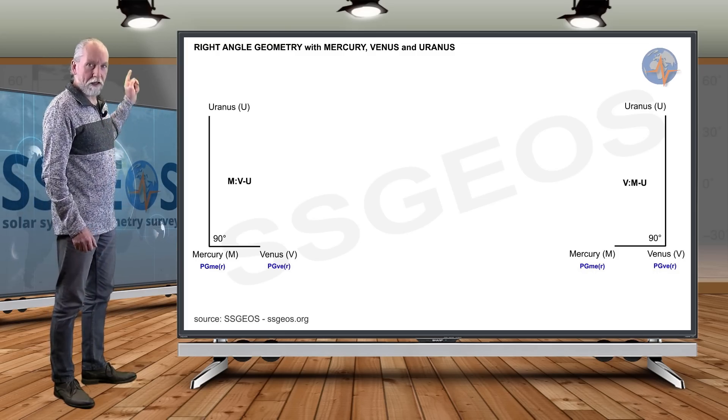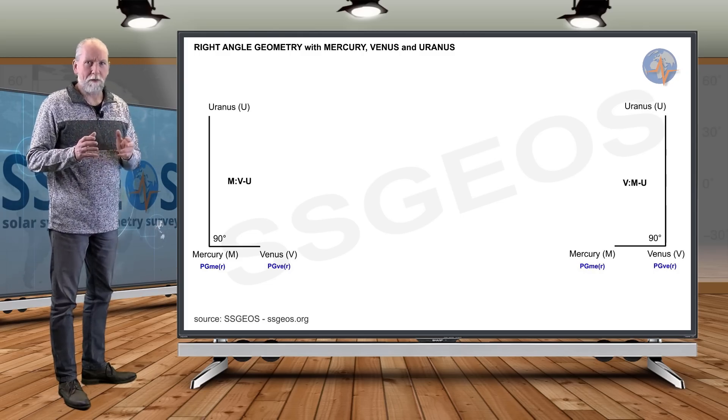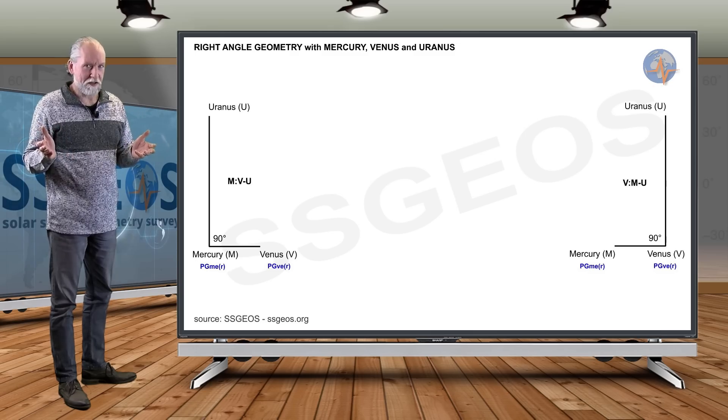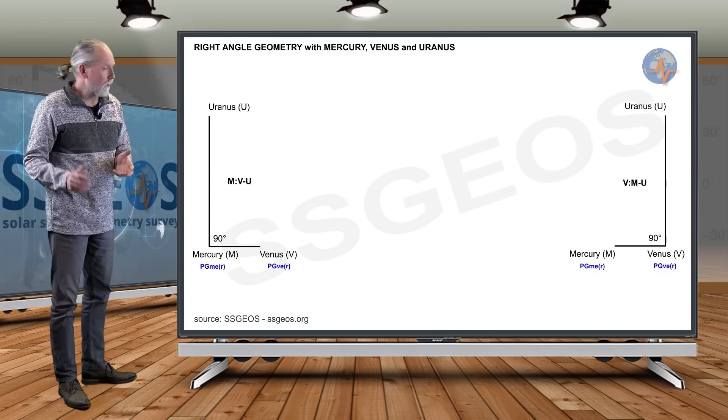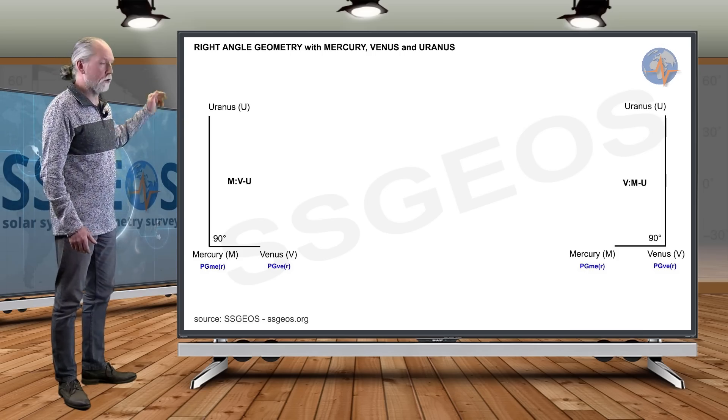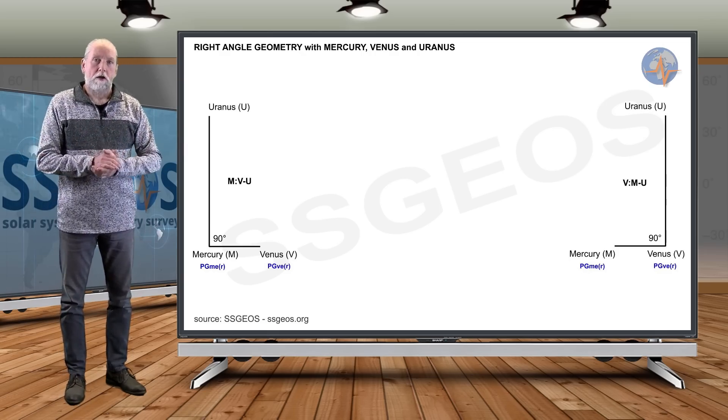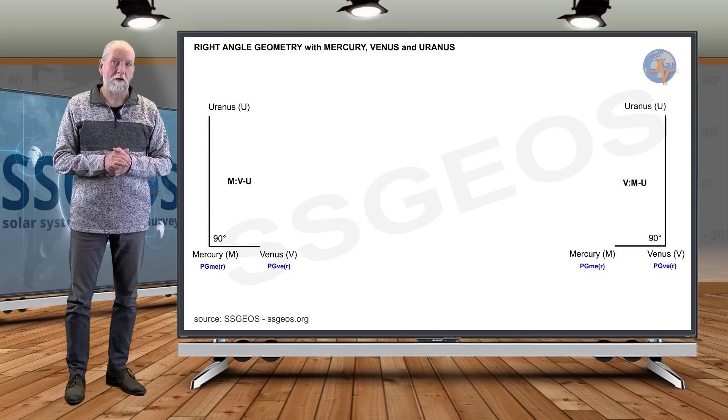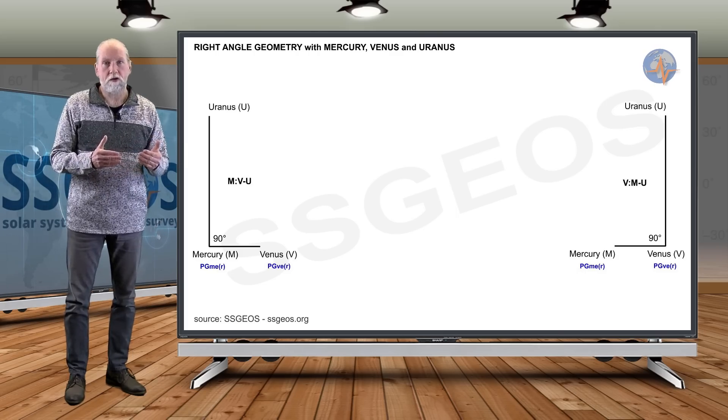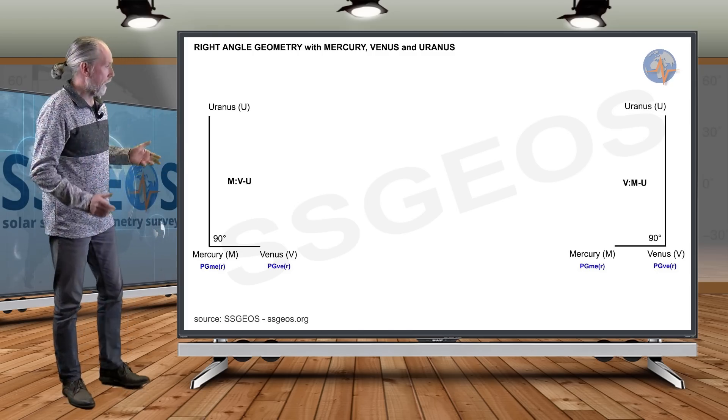Here you see Mercury at the right angle with Venus and Uranus. That particular geometry doesn't happen every week or every month. It happens about three or four times a year, and it usually comes in pairs. So on the other side you see Venus at the right angle with Mercury and Uranus. This is because Mercury and Venus move pretty fast close to the Sun with high orbital velocity. So when they move together, they make this right-angle geometry with Uranus or another outer planet in a short time, within one or two days. That's what we're going to have on 27 and 28 March.